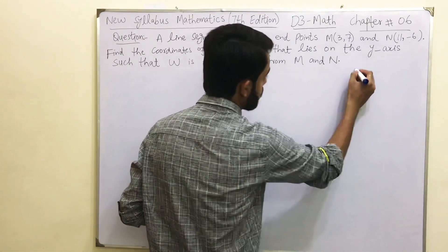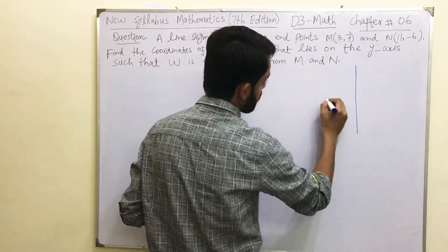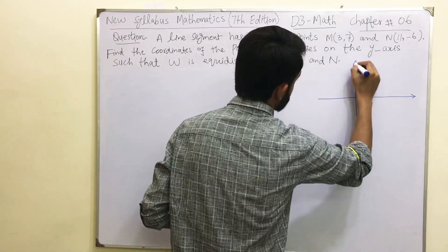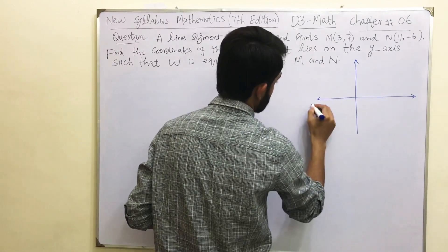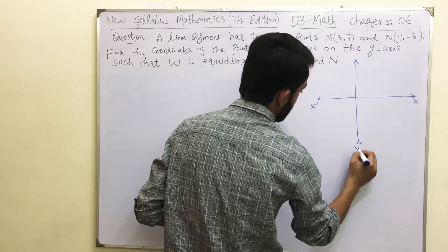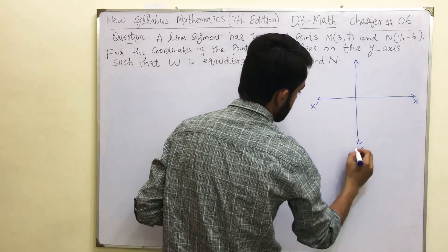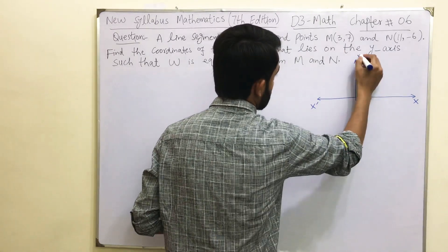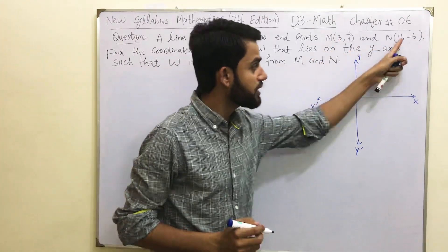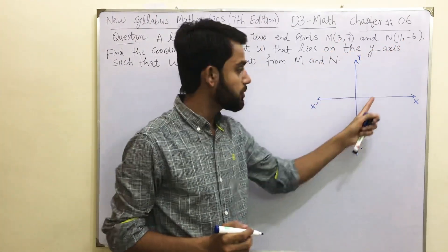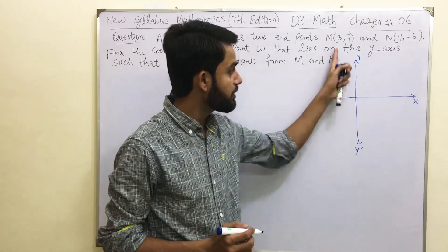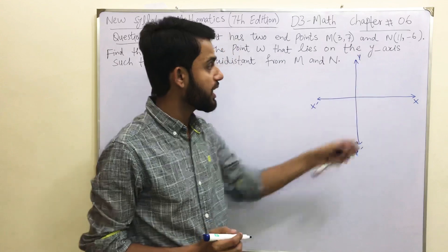We are going to draw the XY plane — this is your y-axis and this is your x-axis. We label negative x, positive x, negative y, and positive y. Since the x-values in both coordinates are 3 and 11, we don't need the negative x-axis because both are positive.